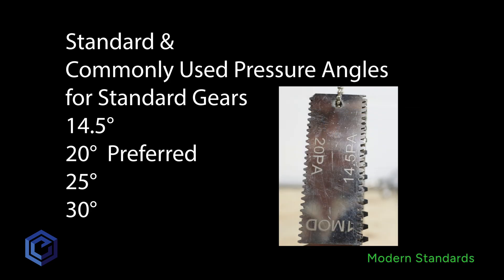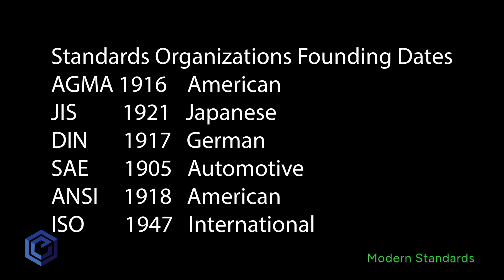So what are the standard pressure angles used in industry today and commonly recognized? Here they are: 14 and a half — Willis did that — 20, 25, and 30; they each have their place. 14 and a half is so common and early that we will have those gears for a very long time. 20 degree pressure angle is the currently preferred pressure angle for gears. The larger pressure angle gears are stronger but make more noise. The formalization of standards organizations came far after Willis, Euler, and others created the system, and these standards that we now use codified many more parameters like pressure angle.